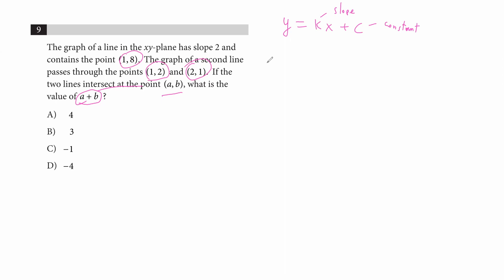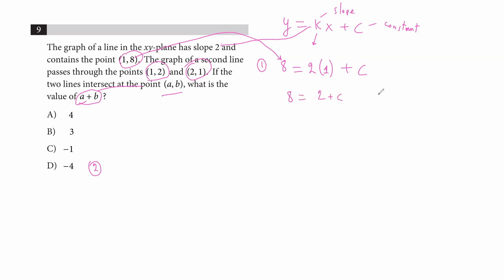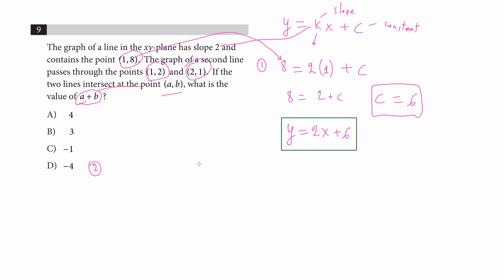Now we apply this equation to the first line. The slope is 2 and the point is (1, 8), so: 8 = 2(1) + c, which means 8 = 2 + c, so c = 6. The equation of the first line is y = 2x + 6.